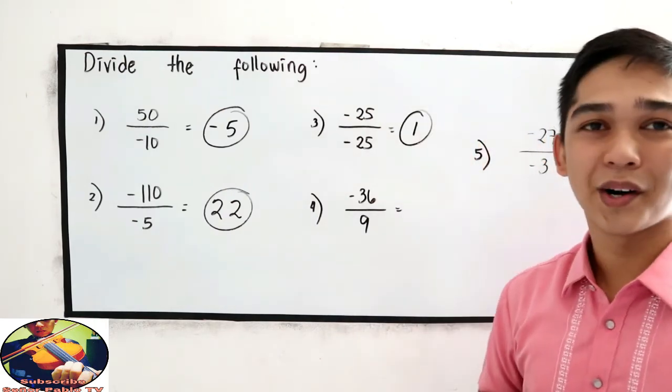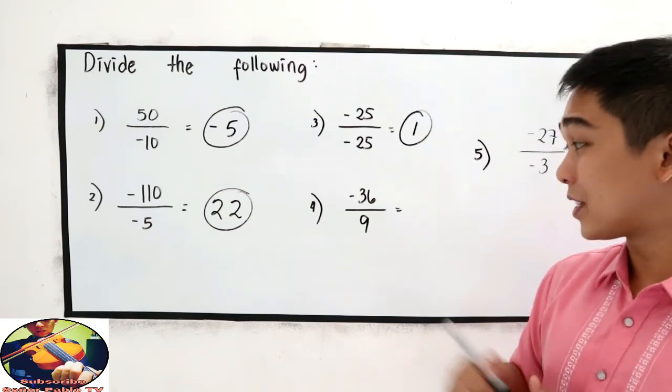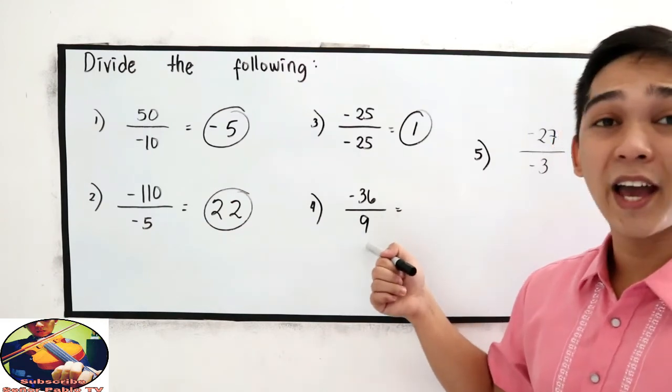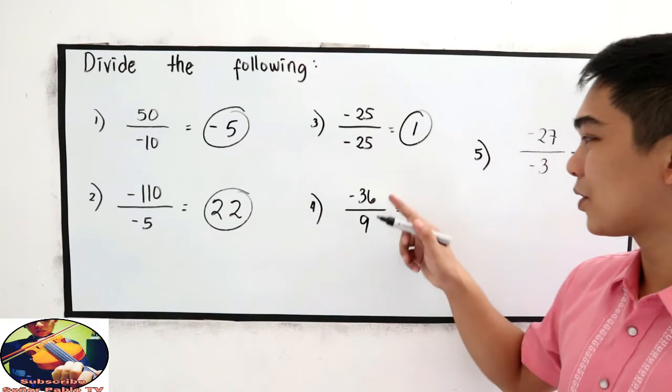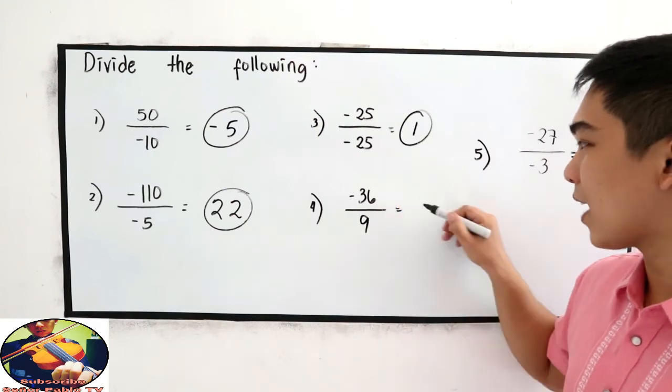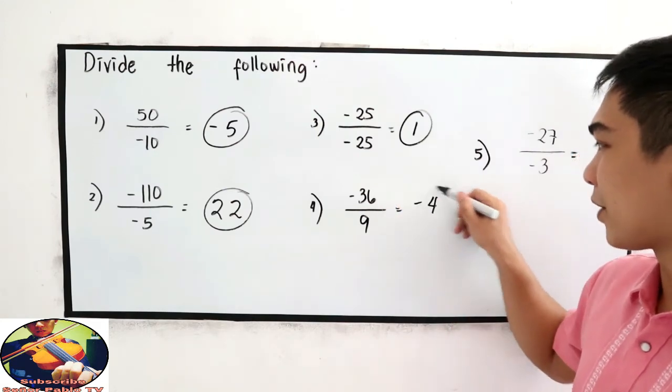Number 4: negative 36 divided by 9. Unlike signs, so 36 divided by 9 is negative 4.